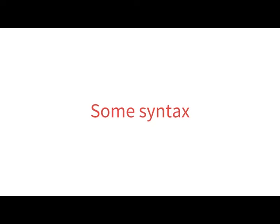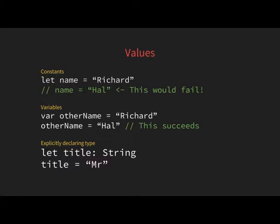Let's get more comfortable with Swift. It has the concept of both constant values and variable values. We want to use constants where we can, using the 'let' keyword: 'let name = value'. That creates a constant — trying to reassign it will fail. We also have variables using 'var': 'var name = value', and that value can be changed later.